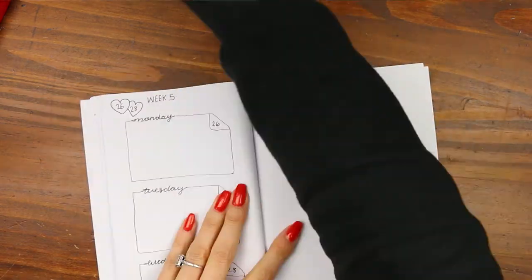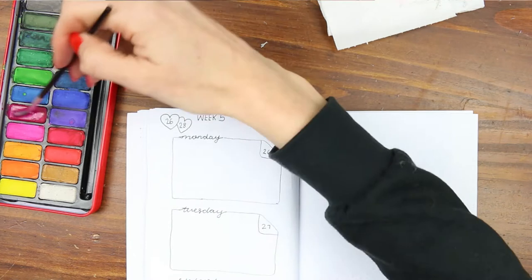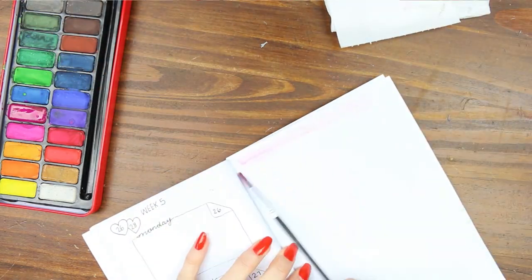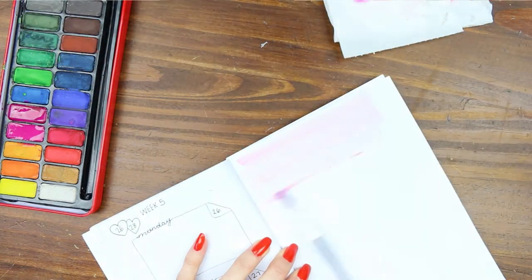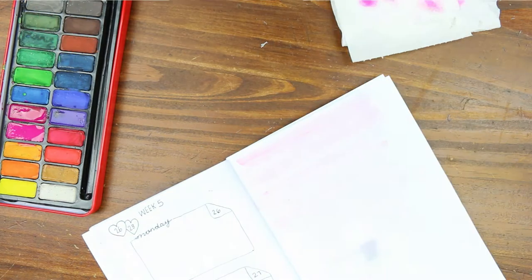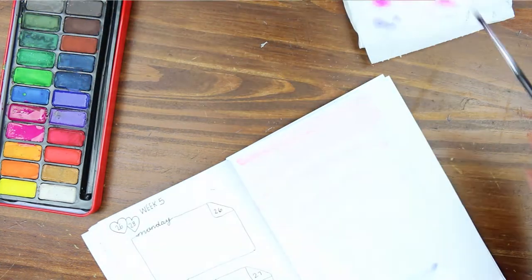And then for the blank page that I've got left I decided to do another quote so I went back into my watercolors. I started with the rose and the crimson at the top and then kind of faded it down and went into violet and marine blue.